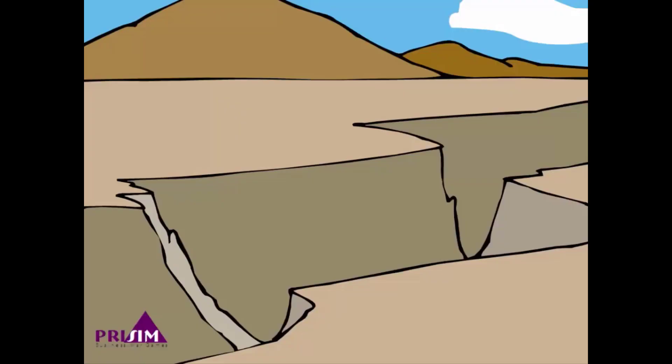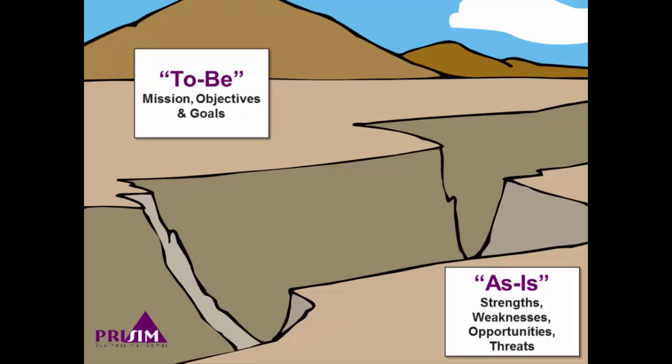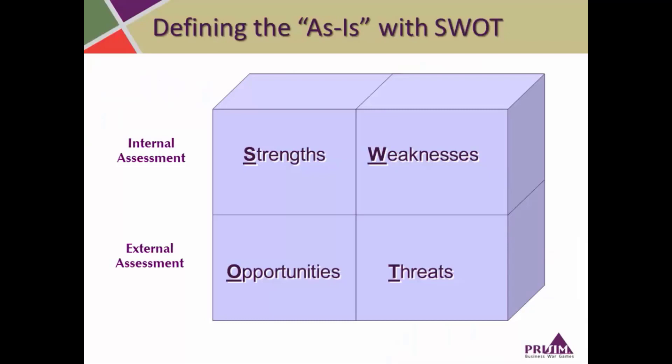To successfully run a company, you need to know both where you currently are — the as-is condition of the company — and where it is that you're trying to go, the to-be. Only then, with those two points defined, can you fill the gap between the two. As you start analyzing the as-is condition, you can use a SWOT analysis — a simple tool to assess your current state. SWOT stands for Strengths, Weaknesses, Opportunities, and Threats. Strengths and weaknesses are internal, whereas opportunities and threats are typically external.